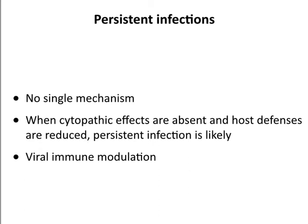There isn't a typical single mechanism of persistence—every virus has a different one. But in general, if the virus is not cytopathic and if we have reduced immune responses, this is the recipe for a persistent infection. Reduced immune responses can result from immunosuppression, but many of us get infected at birth with herpes viruses. Mostly the virus is modulating the immune response very effectively, and that's a major reason for persistence.